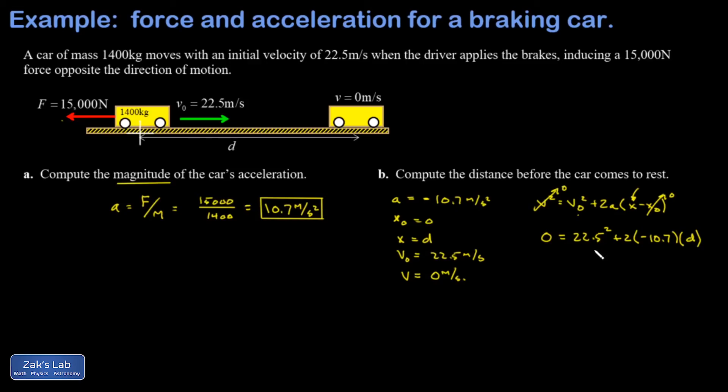times my final position which I'm calling d. Now I just have to solve for d. So I'm going to subtract the 22 and a half squared from both sides and then divide by this coefficient of d and I'll have it in one step and I get a braking distance of 23.7 meters.